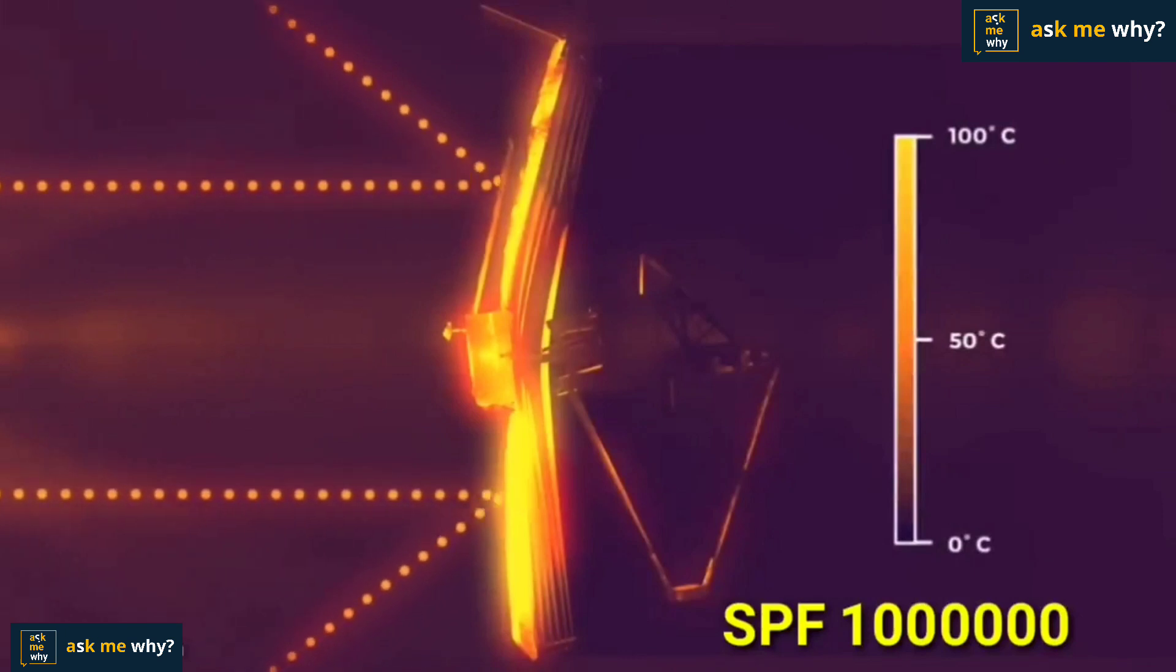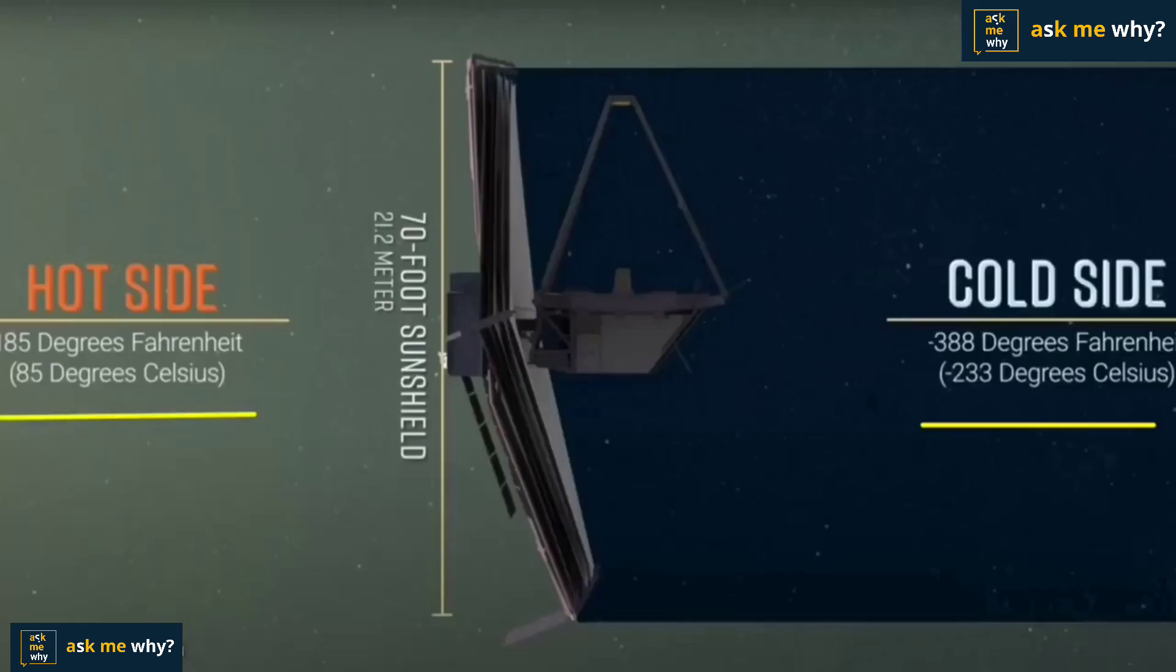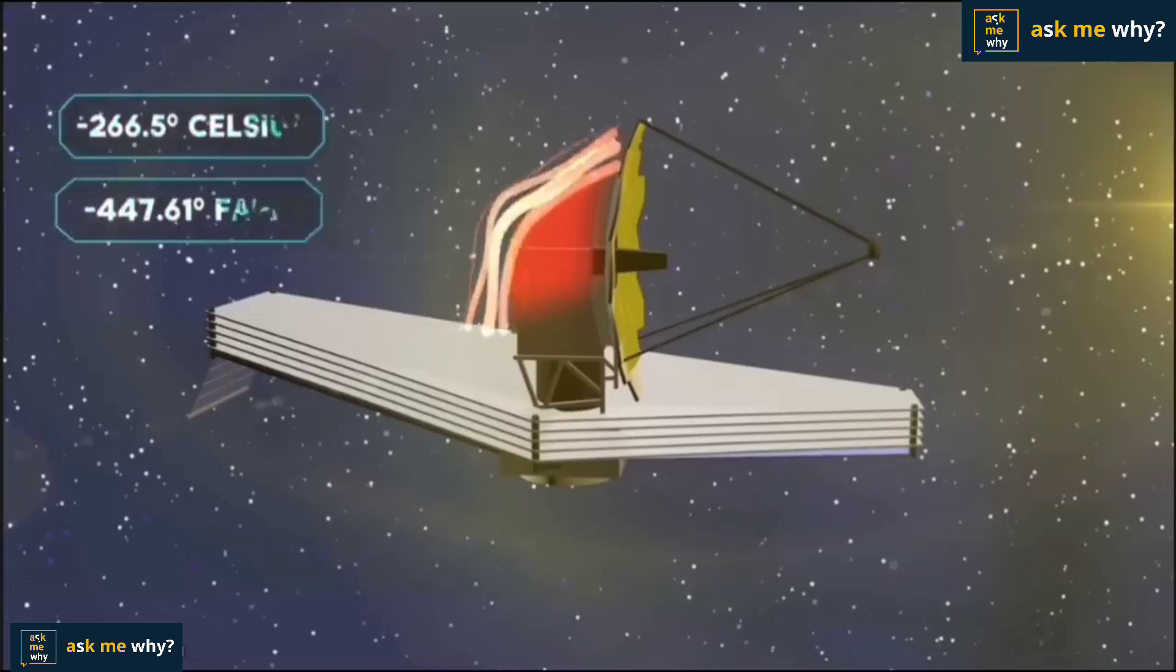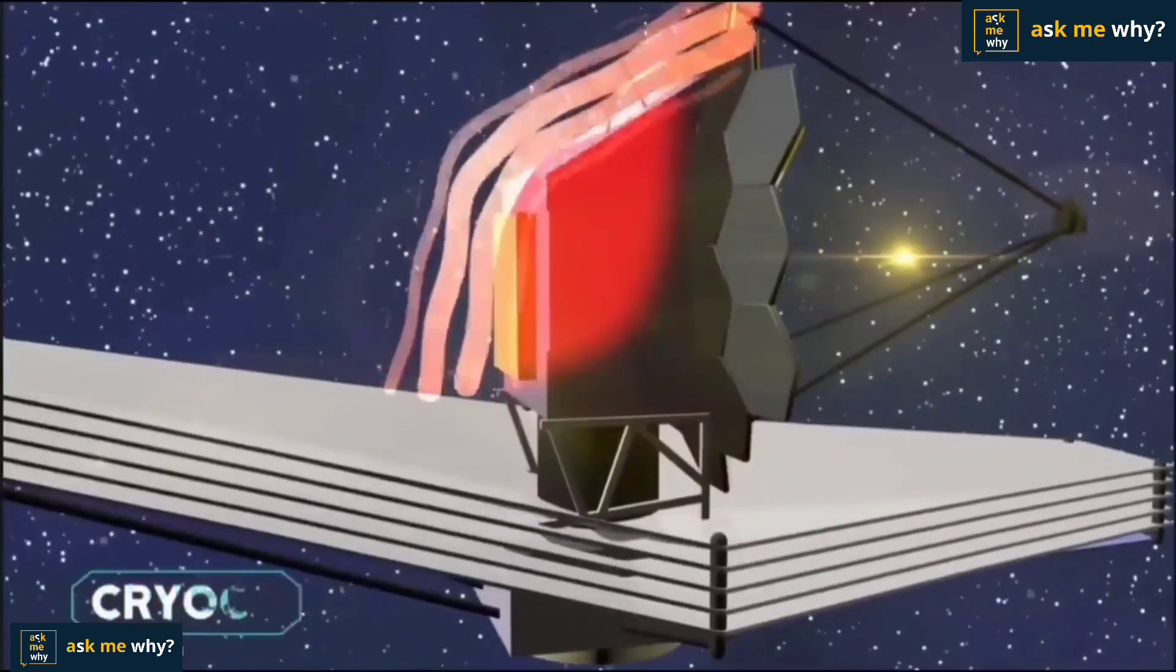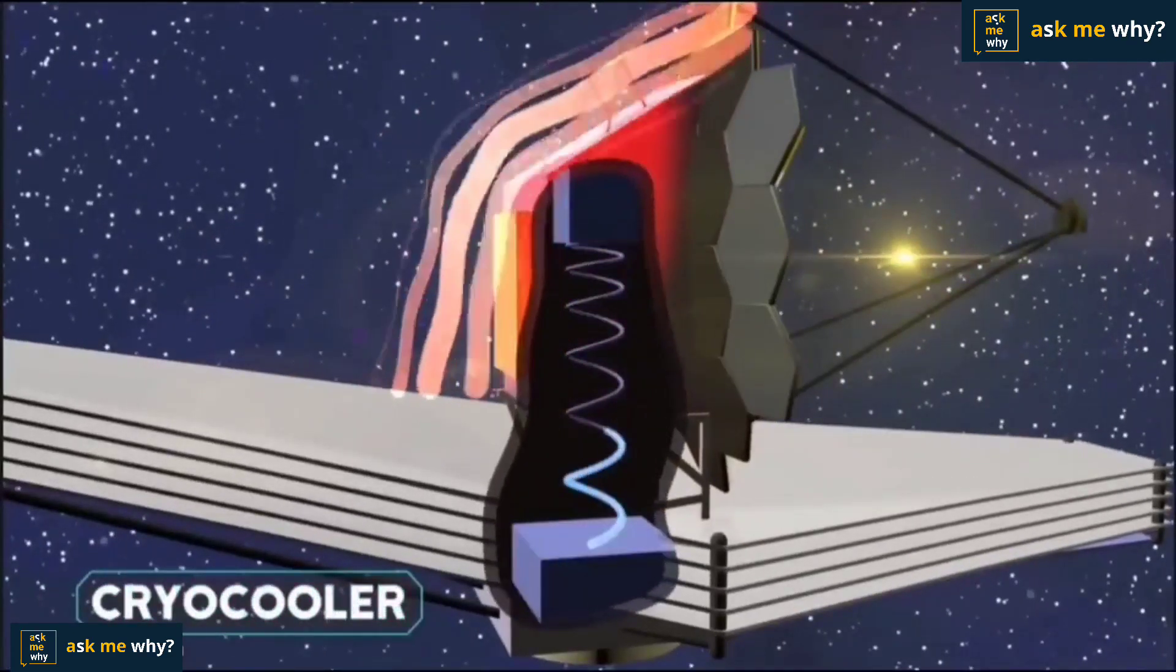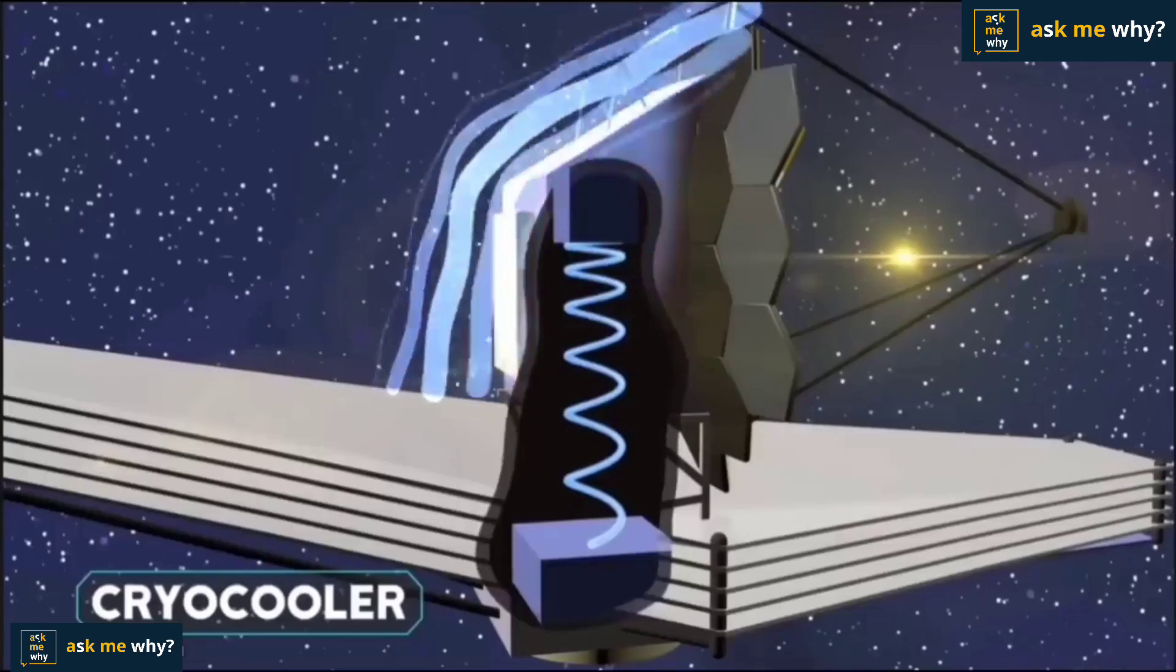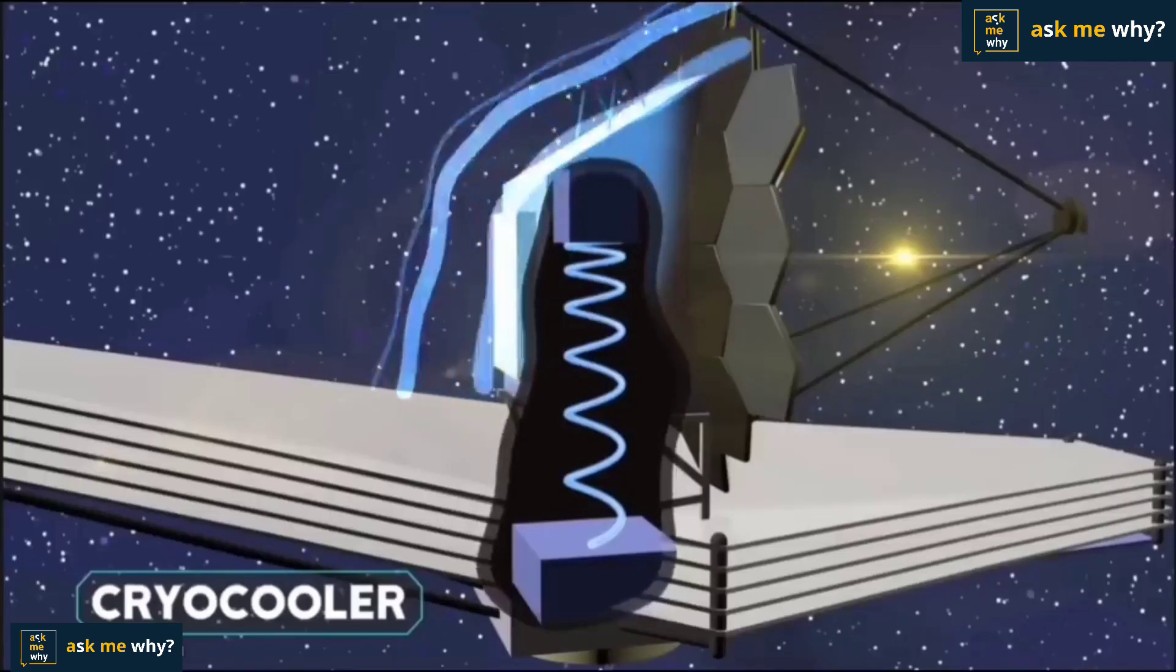This telescope to operate correctly, the dark side must have a temperature of minus 233 degrees celsius. Because if it is hot, infrared rays will be released. To keep it cool, a cryo cooler was used to be cooled by liquid helium. The design is very much impeccable to avoid any vibrations in it. Small vibrations in the telescope cause blurred images.